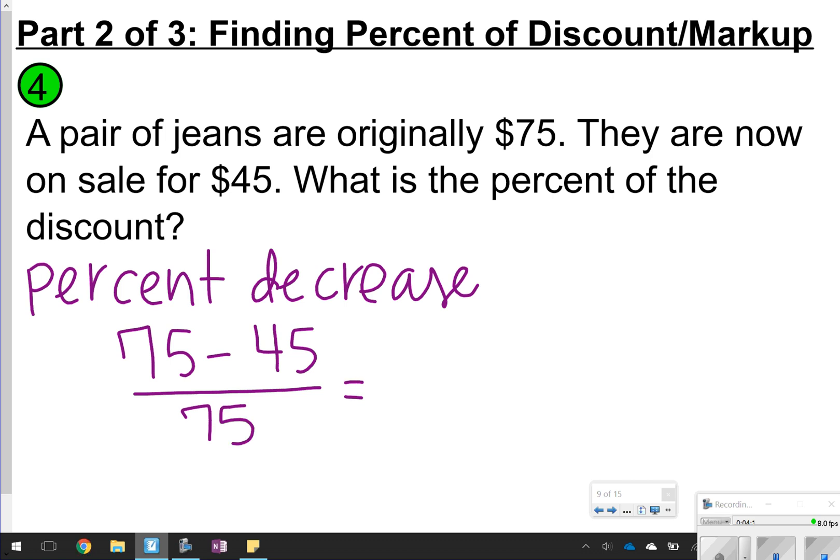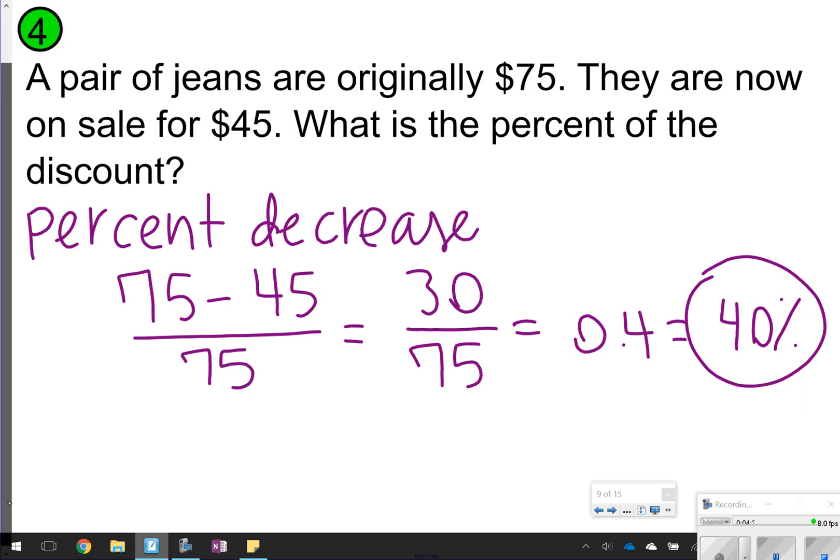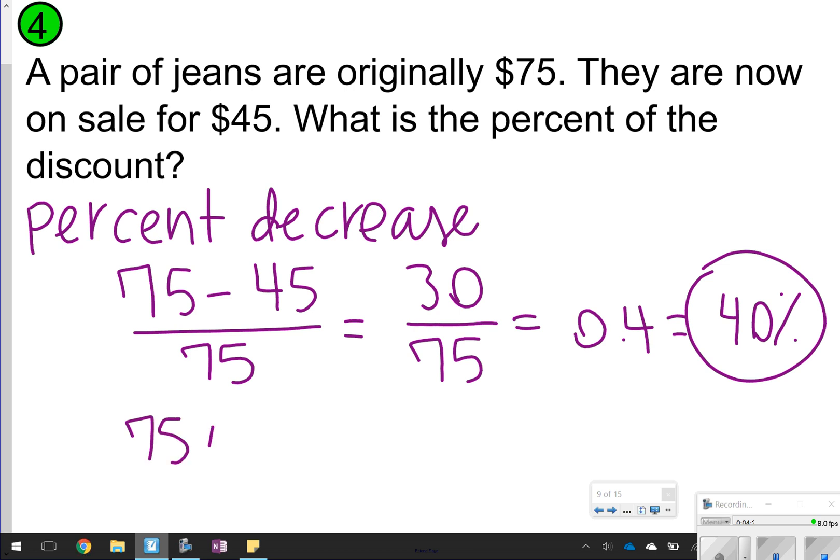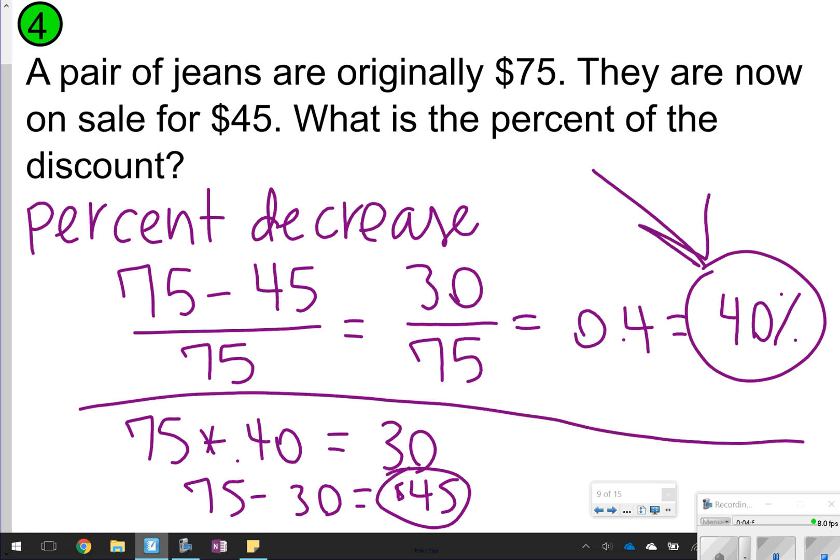So that's essentially what we're doing here. We're figuring out how many dollars they decreased it by. So 75 minus 45 gives you $30, and that's $30 out of the $75 original price. So I'll just be dividing by 75, and you get this decimal 0.4, and that's going to translate to 40% off. You can always check to see if you got that right by using the percent equation. So if you did 75 times 0.40, that gives you $30, and 75 minus 30 does give you the 45 that they're saying it's on sale. So that's just one way you could check it as well. So answer right here is 40% off.